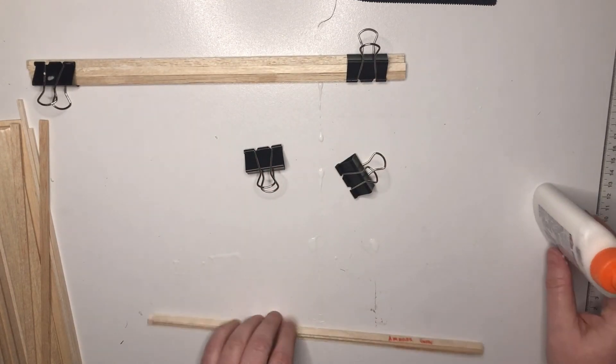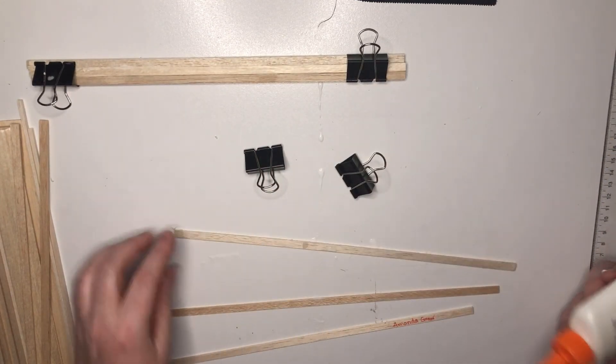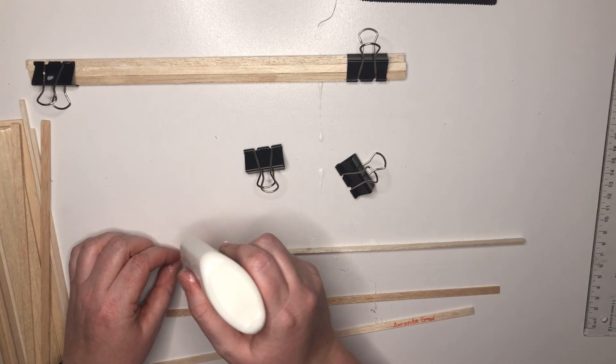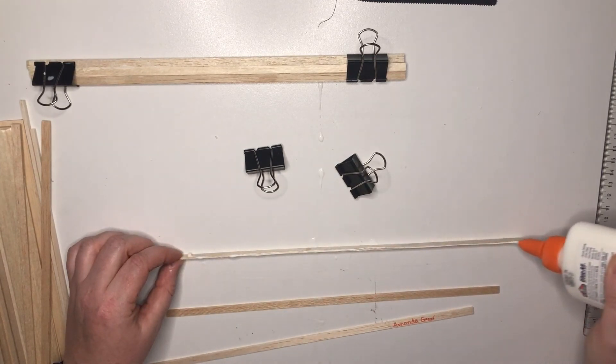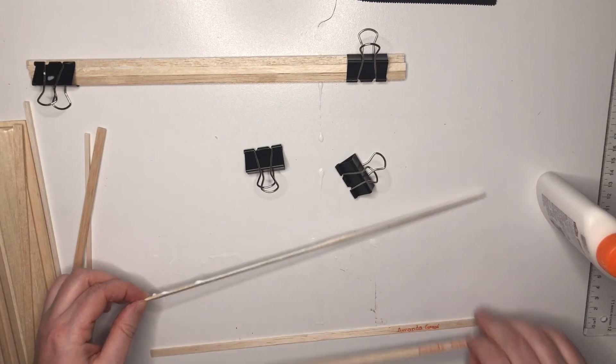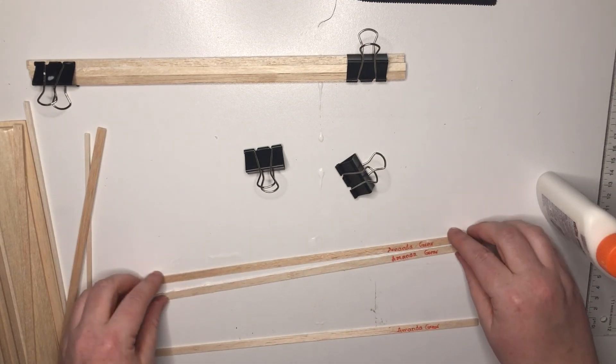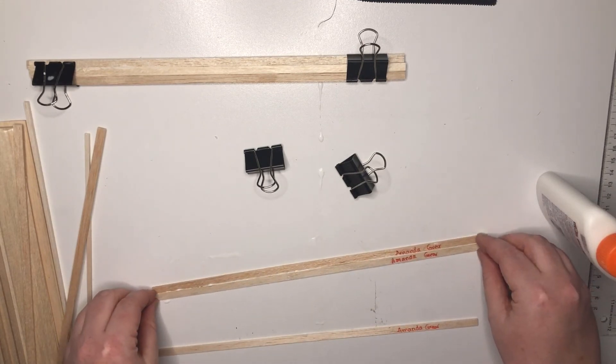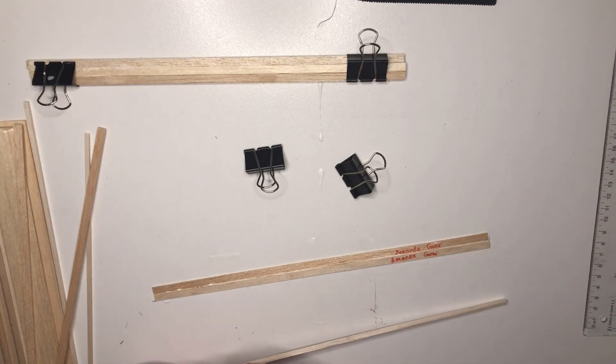Now we do the other one. Put glue on them, lots of glue. Glue one, squish them together, line them up, and then glue the other one.